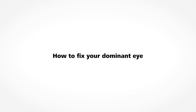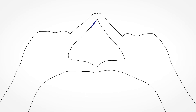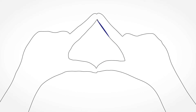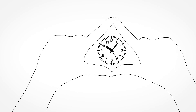To adjust the diopter on the eyepieces, we first need to determine your dominant eye. Step 1: extend your arms out in front of you and create a triangular opening between your thumbs and forefingers by placing your hands together at a 45-degree angle. Step 2: with both eyes open, center this triangular opening on a distant object such as a wall clock or doorknob. Step 3: close your left eye.